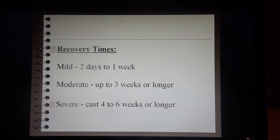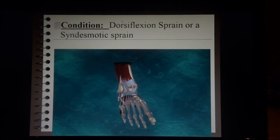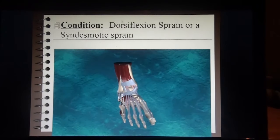Recovery time for a mild sprain is two days to one week. A moderate sprain can take up to three weeks or longer. A severe sprain with complete ligament disruption may require an air cast for four to six weeks or longer.